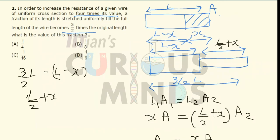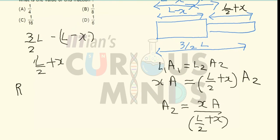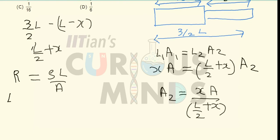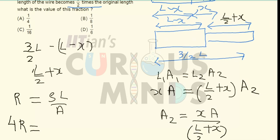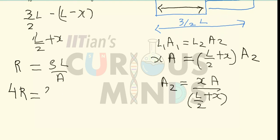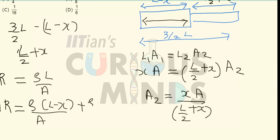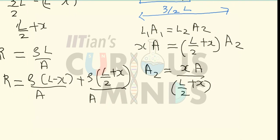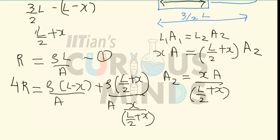It is given that the resistance after stretching becomes 4 times its original value. The original resistance R equals ρL/A. The new resistance 4R equals the resistance of the unstretched section, ρ(L minus X)/A, plus the resistance of the right-hand stretched section, which is ρ(L/2 plus X) divided by area A2, where A2 equals A·X divided by (L/2 plus X).